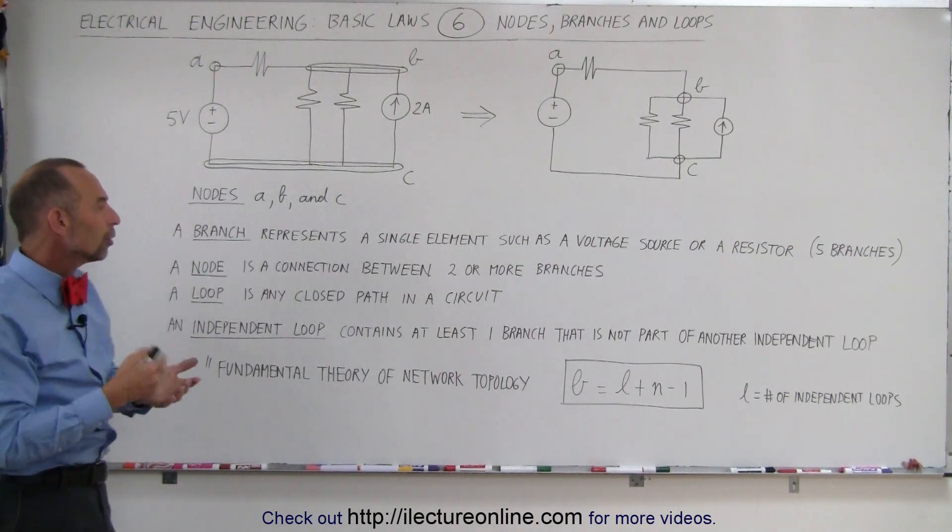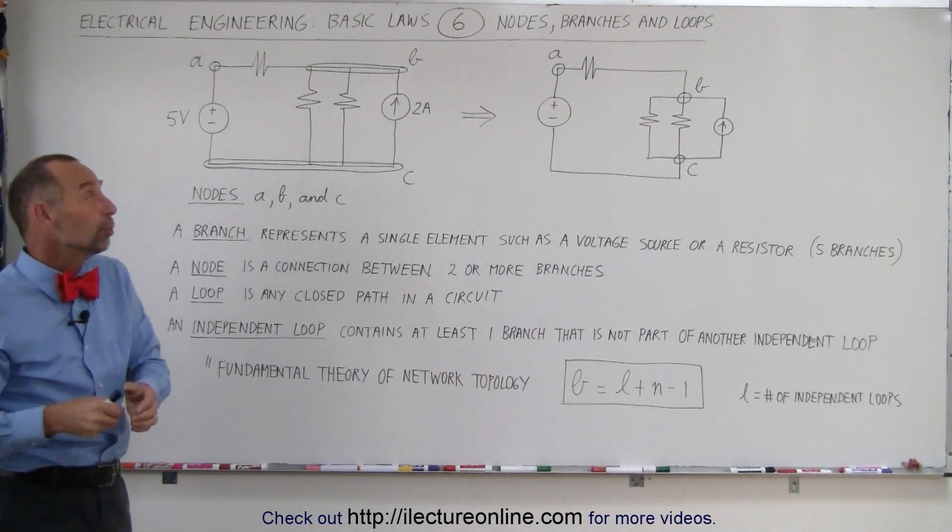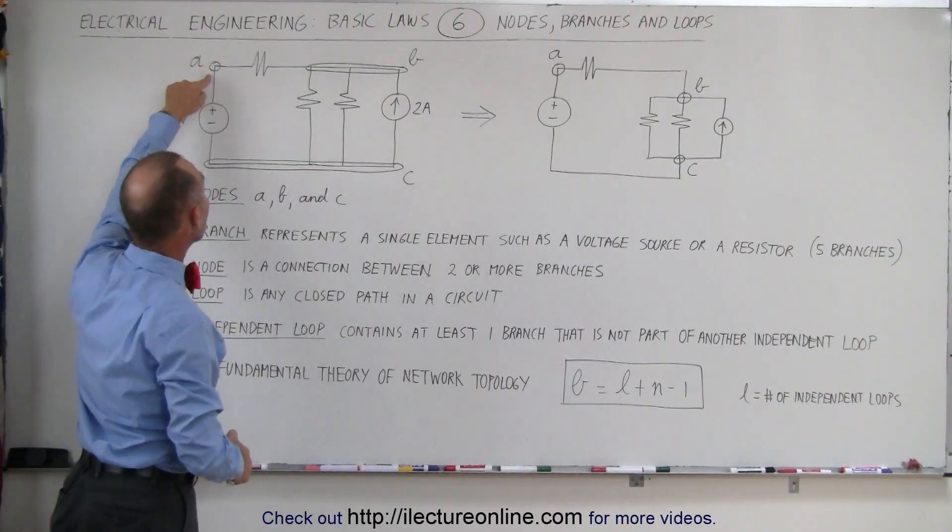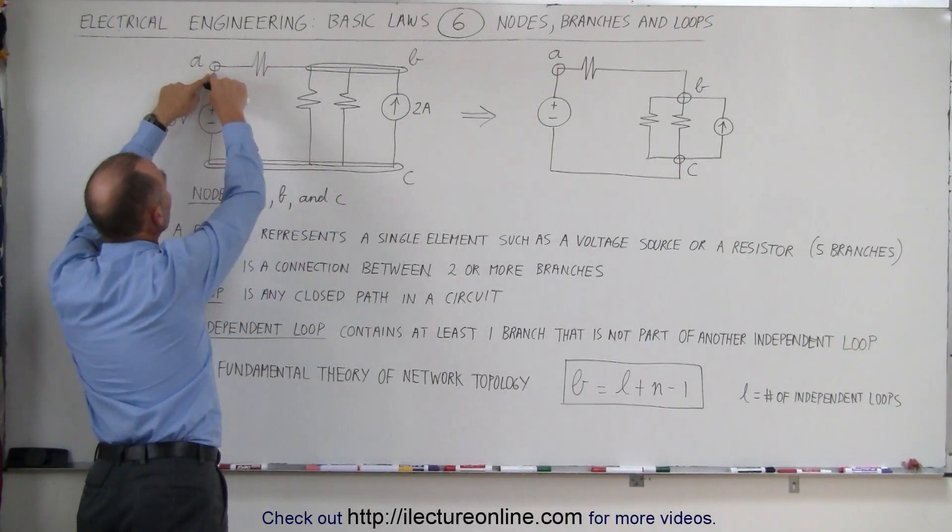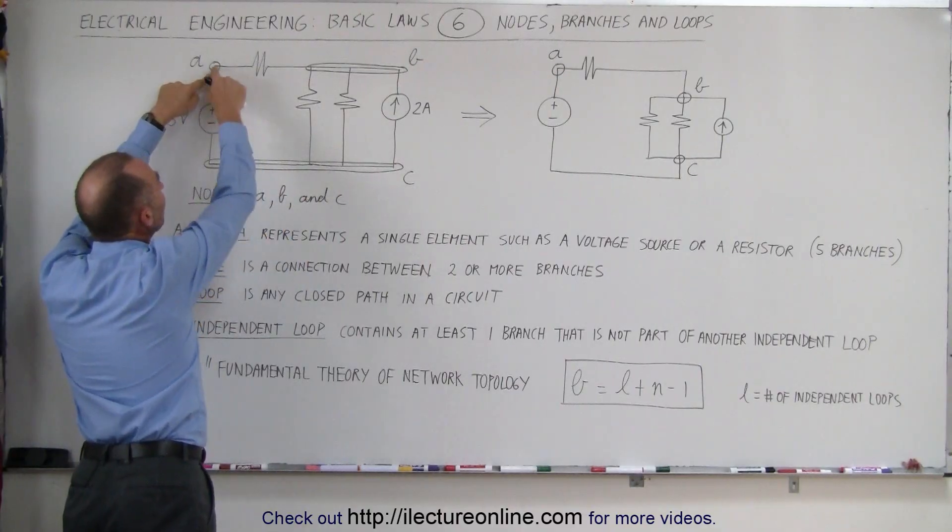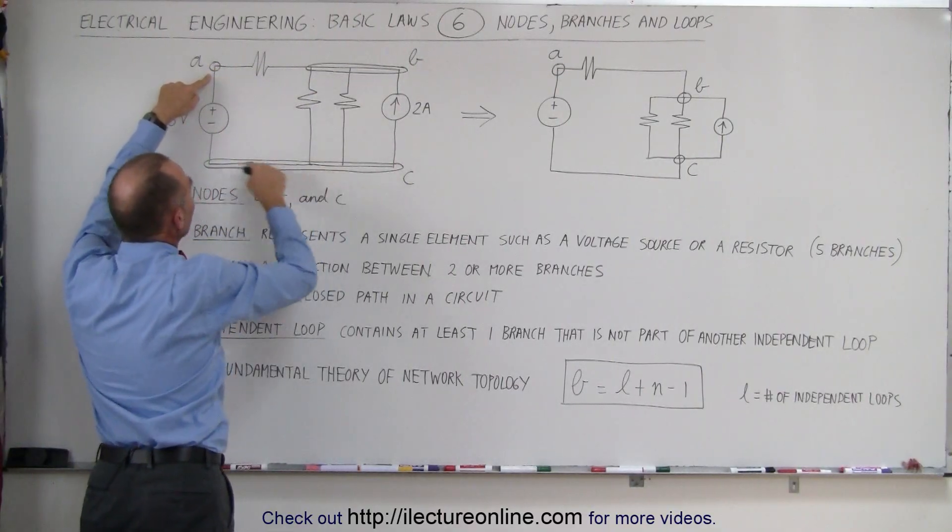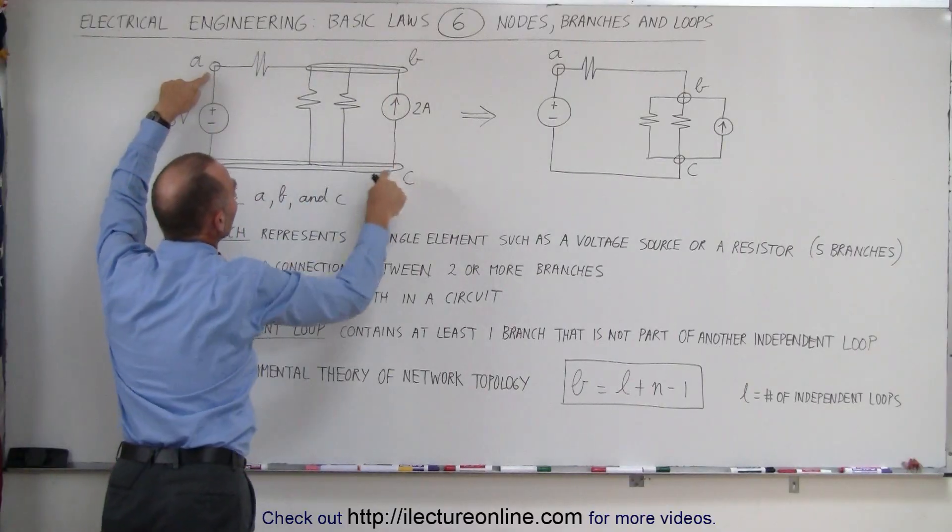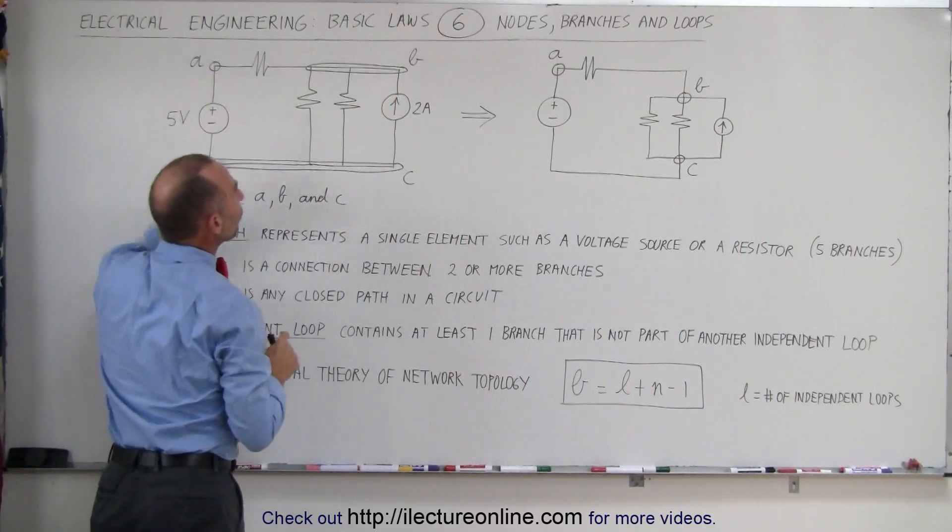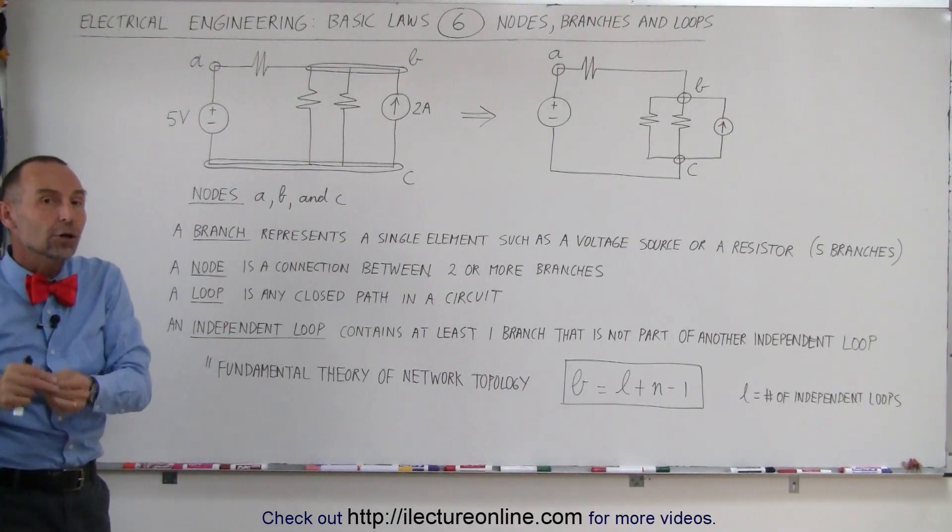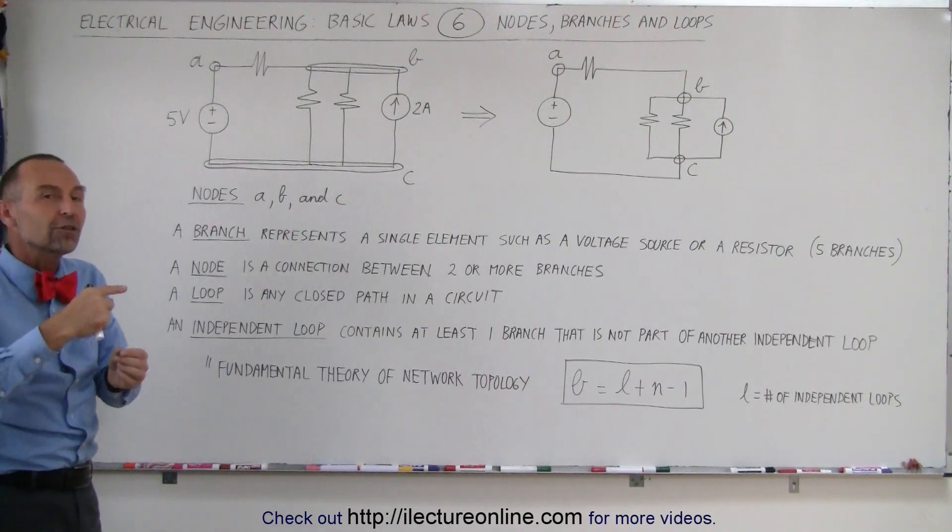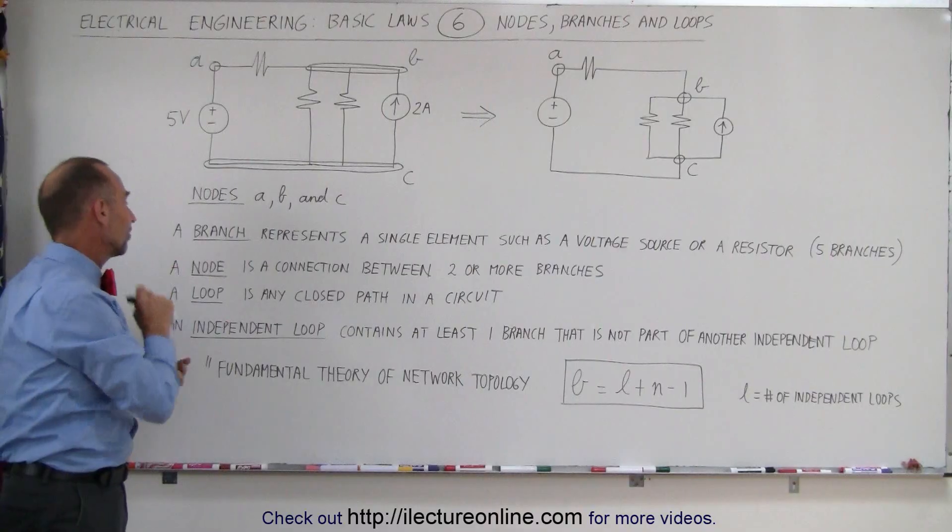A loop is any closed path in the circuit. A loop starts from any node like node A, you then follow any path until you get back to node A. That would be a loop. We can take another path this way that would be a second loop starting from A to here. That would be a third loop. So you can see that a loop is simply any path that starts at a node, goes on a continuous path and ends up at the same node.